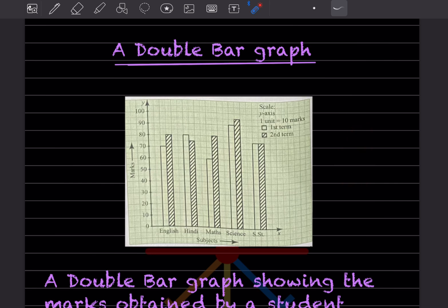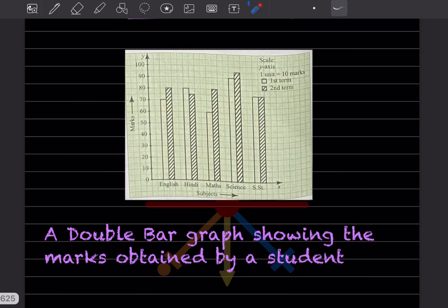This is called a double bar graph. Here, the double bar graph is showing the marks obtained by students in different subjects like English and math. These are the marks - that is called a double bar graph.